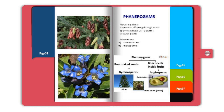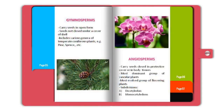Phanerogams are further divided into gymnosperms and angiosperms. Gymnosperms are those that carry naked seeds — that is, seeds that do not contain any outer shell or outer cover. Gymnosperms carry their seeds in open form and include various genera of temperate coniferous forests, for example pine and spruce.